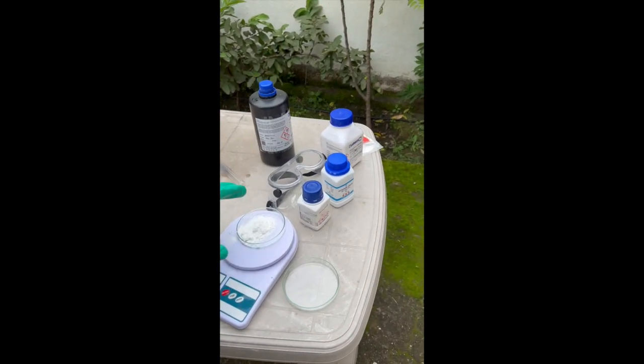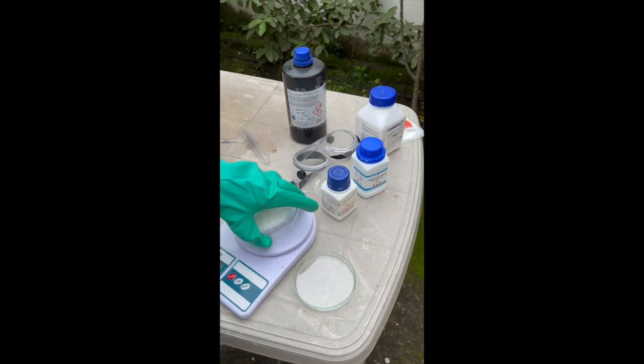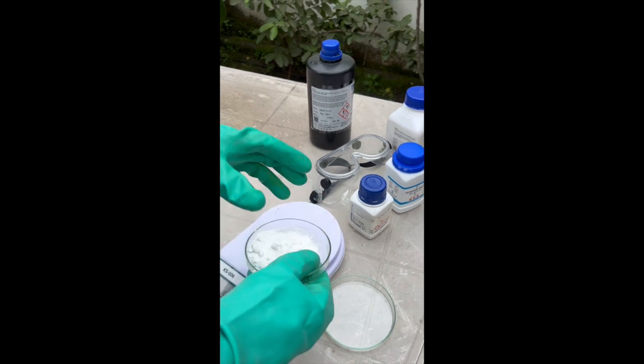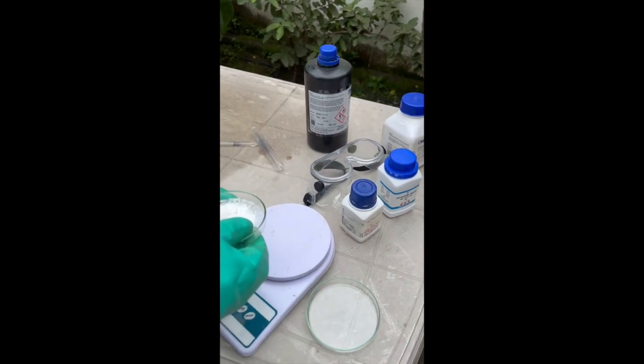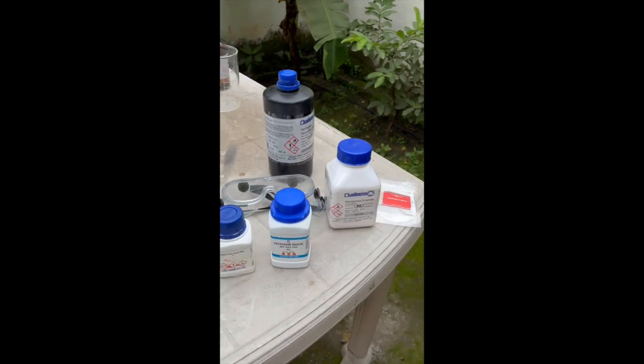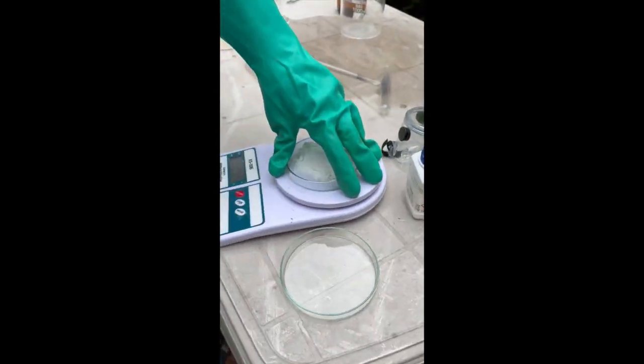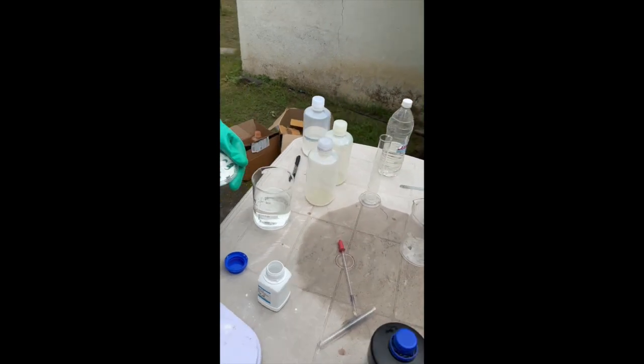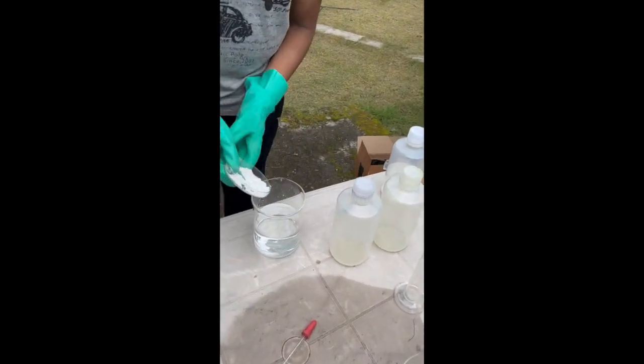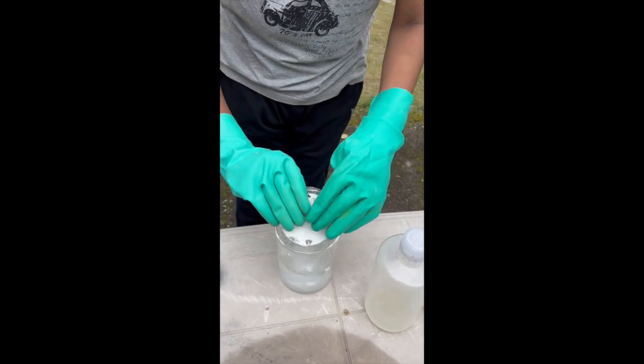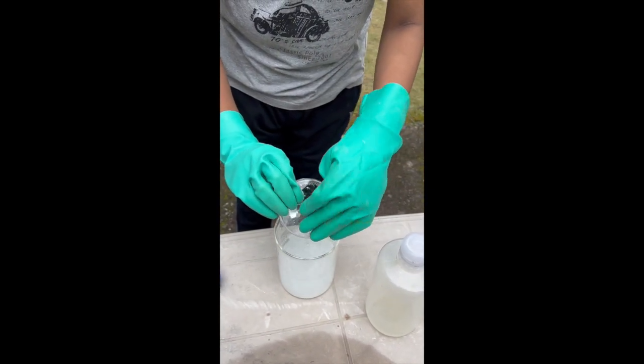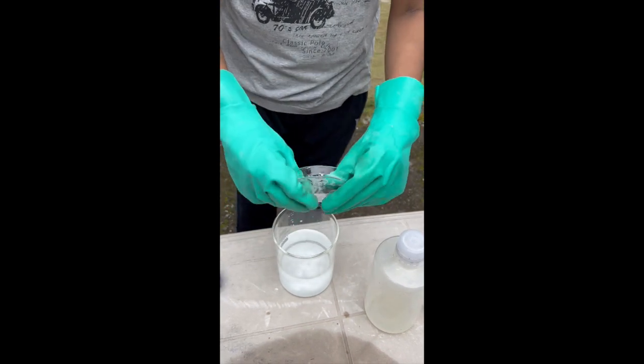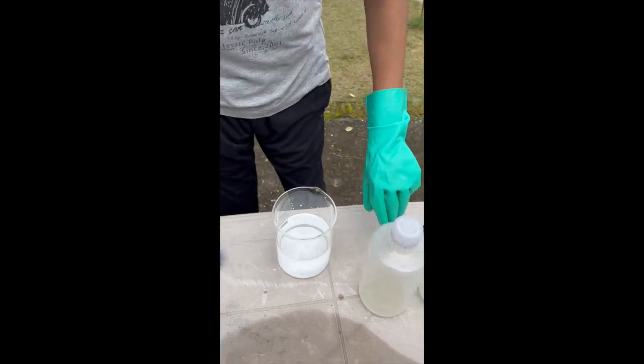For solution B, we require potassium iodide. So, I am measuring it. I want 21 grams, but the kitchen scale is very inaccurate. So, I might have to just trust my instincts and go ahead with it. To a beaker with 498 ml of distilled water, I will add 21 grams of potassium iodate.